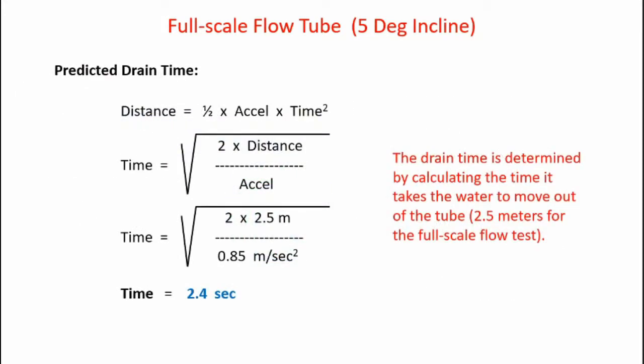I can predict the drain time of the pipe by taking the distance equation, where distance equals one-half times acceleration times time squared, perform a little bit of algebra, and we can do the calculation and see that the drain time is 2.4 seconds. That's the theoretical drain time for the system.